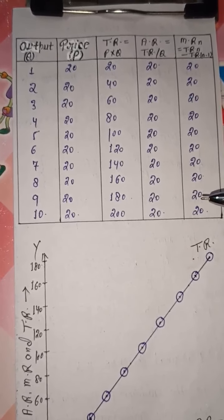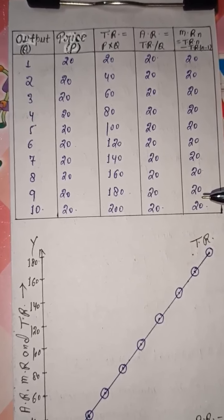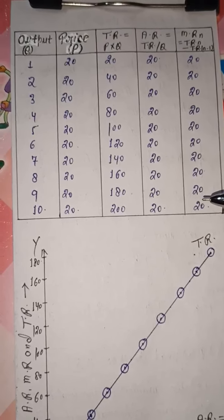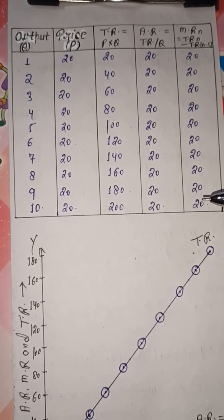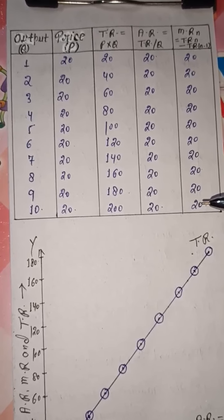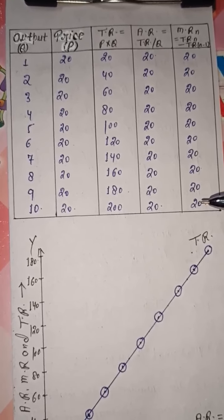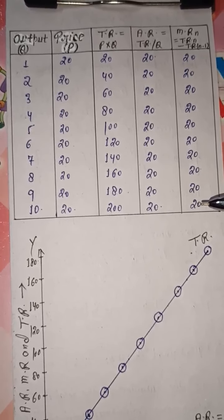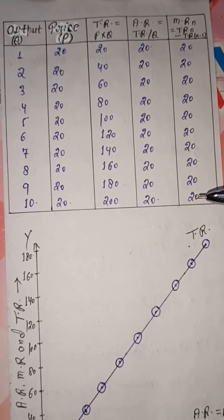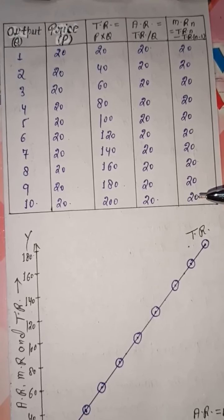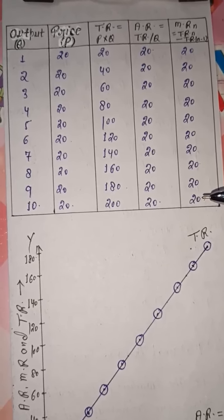This is clear — MR remains 20 up to the last unit. It means as we increase output, the total value does change — it keeps increasing at a constant rate — but the average value and marginal value both do not change; they remain constant and coincide with each other.